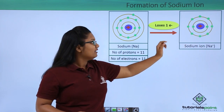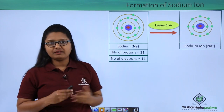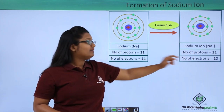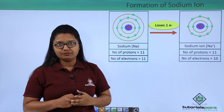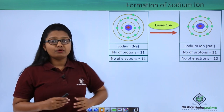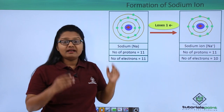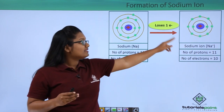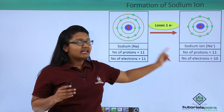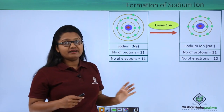After losing this extra electron, the sodium atom now has two shells which are completely filled. This sodium atom has 11 protons but only 10 electrons, since it has already lost one electron. These 10 electrons nullify 10 protons, but there is one extra proton which is not nullified, giving this sodium atom a positive charge. This means this version of the sodium atom is not neutral but is positively charged.